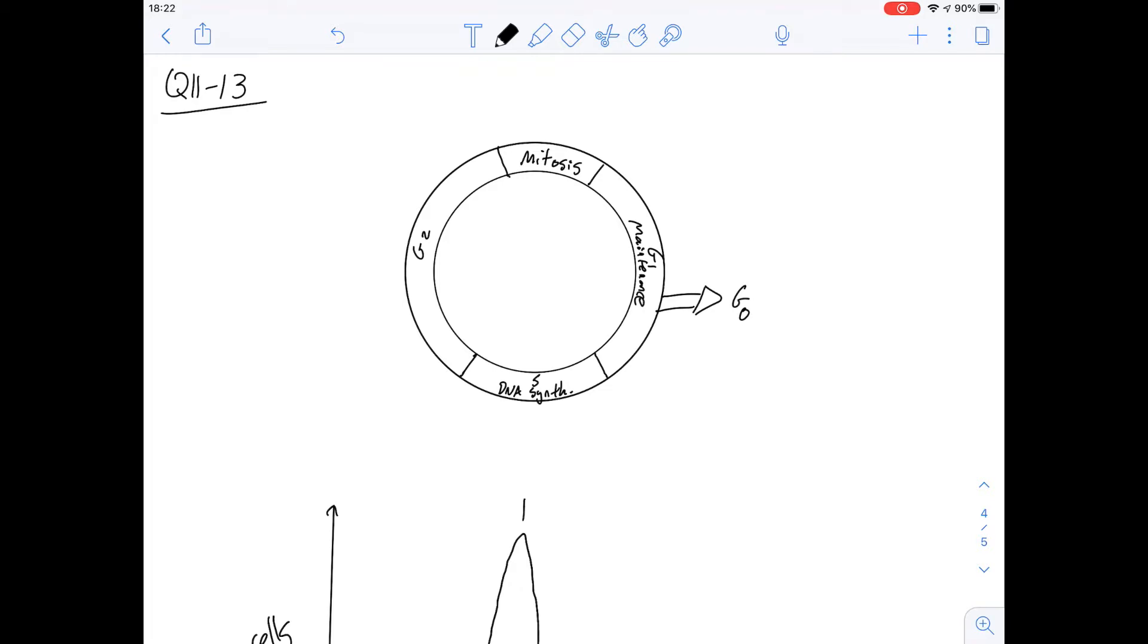We're also told about this G0 and it's where the cell stops this dividing process and just sits in situ. We're told that G0 can interrupt G1 so the cell can be going through normal cell maintenance and then just decide not to divide and sit in G0 for as long as it wants until it wants to divide again and that's what makes G1 the most variable stage of this cell cycle.